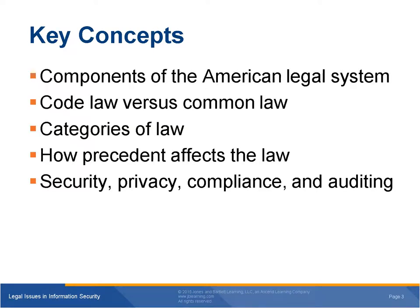Key concepts we will look at are the components of the American legal system, code law versus common law, categories of law, how precedent affects the law, and security, privacy, compliance, and auditing. When you complete this chapter, you will be able to describe the American legal system, explain sources of law, distinguish between different types of law, explain the role of precedent, describe the role of regulatory authorities, explain the difference between compliance and audit, and describe how security, privacy, and compliance fit together.